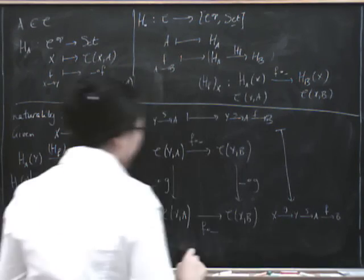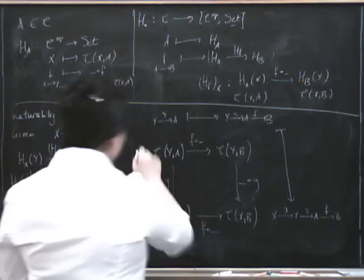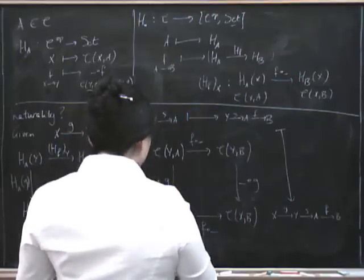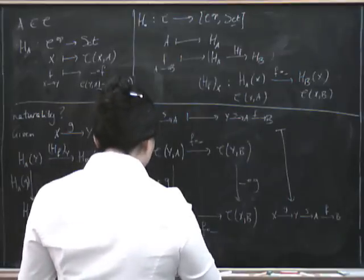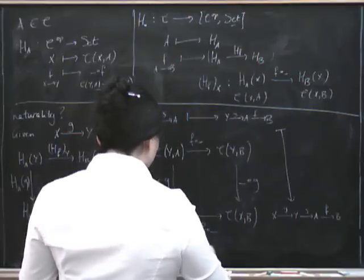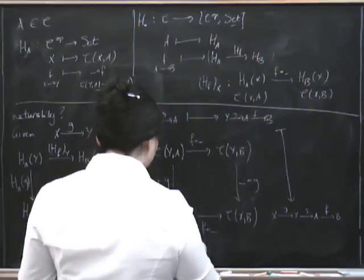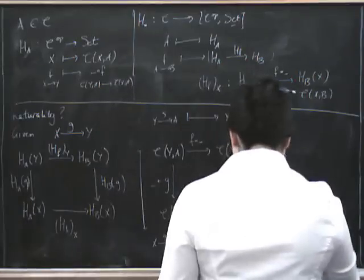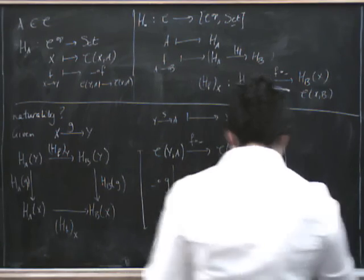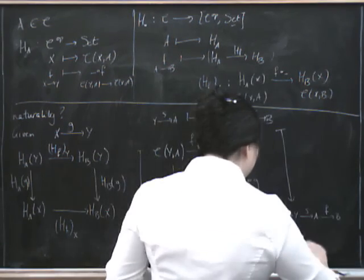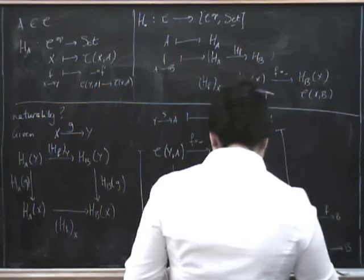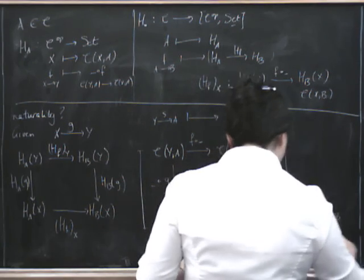If we come down this way, we're going to compose with G first. So we get X to Y to A. That's G followed by S. And then we come along here and we're going to post-compose now by F. X to Y to A to B. So this is G, S, F.